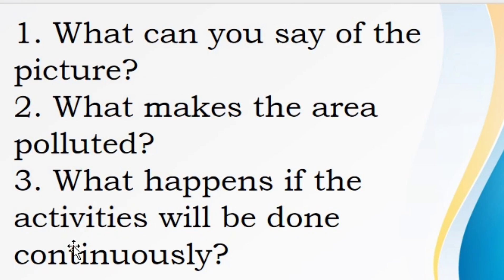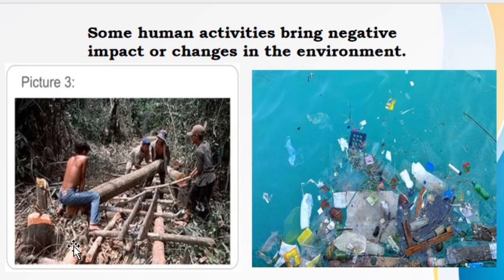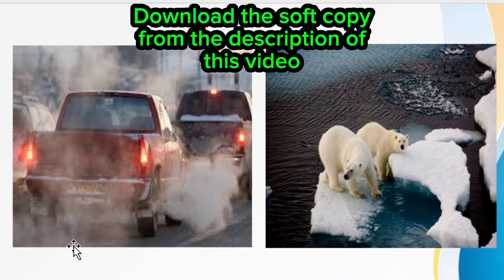Let us read the questions for number 1, number 2, and number 3. Some human activities bring negative impact or changes in the environment, just like what is seen in the pictures, especially picture number 3. What do you think the people are doing? How about for the next picture — what can you see from the water? How about in this picture? Can you tell something about what is shown in pictures 3 and 4?